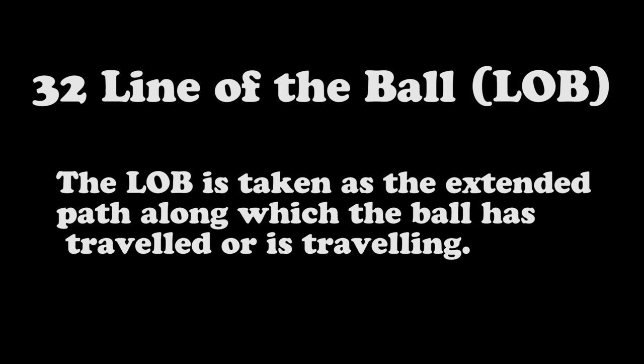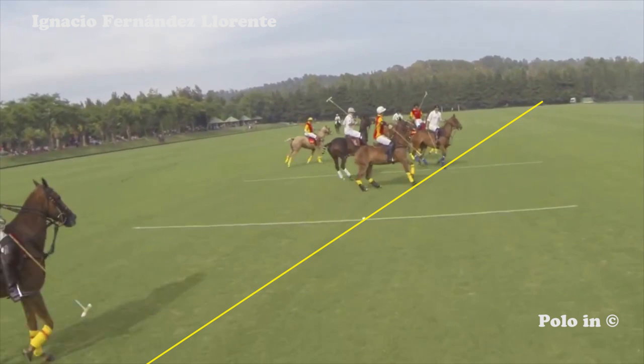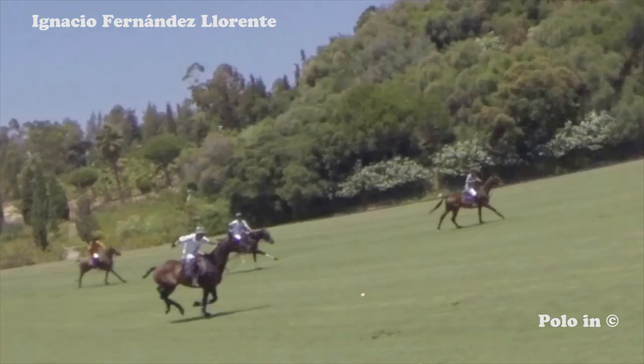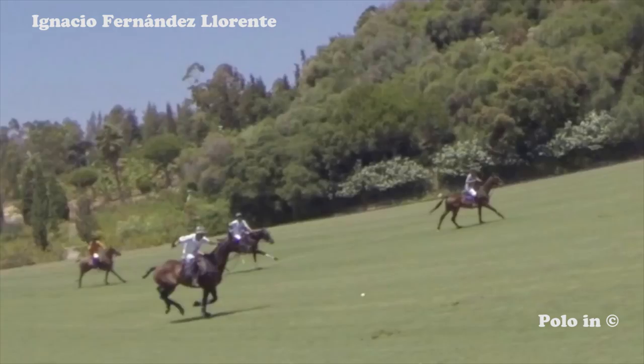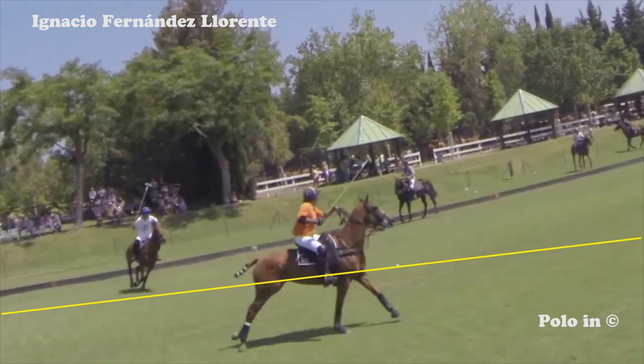Line of the ball — lob. The lob is taken as the extended path along which the ball has traveled or is traveling. The line of the ball is what will guide all players and lets them know what they are allowed or not to do on the field. Each shot generates a new line unless it is following a previous shot in exactly the same direction. Consider the path the ball has here — this is the line of the ball. Always be aware of which is the last line; it is the one that counts the most.